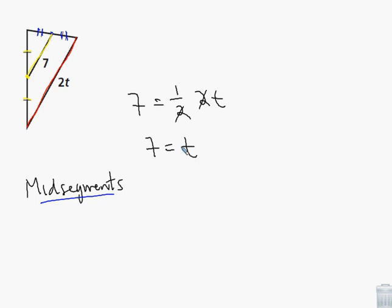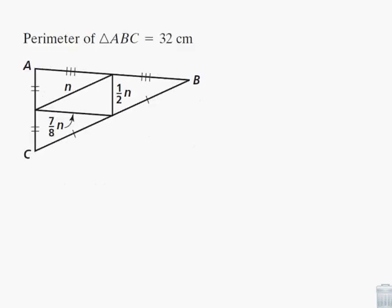And that's the answer. The question would be asking to find the value of the variable. Here's another problem where we want to find the value of the variable. And this one's a little more tricky. We're given that the perimeter of this whole triangle is 32.